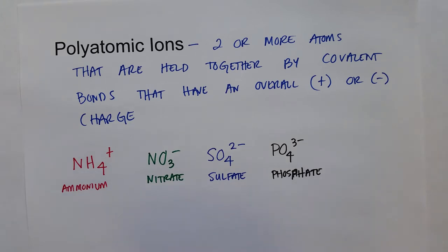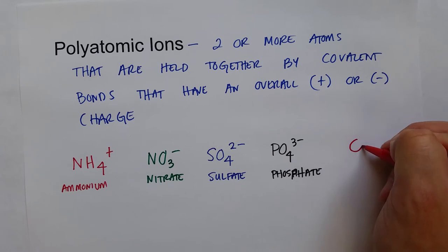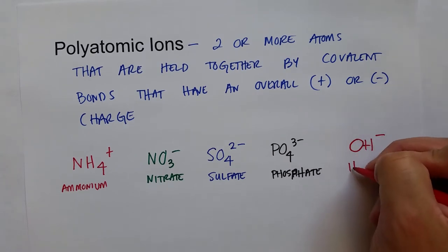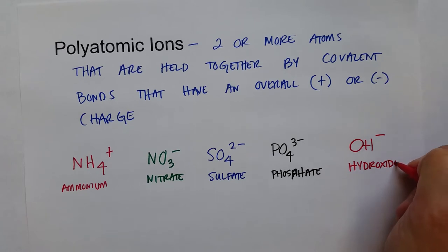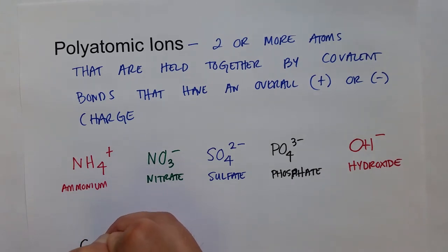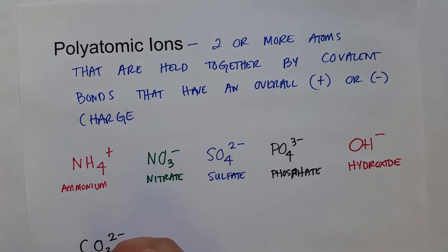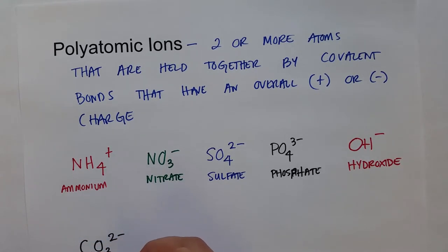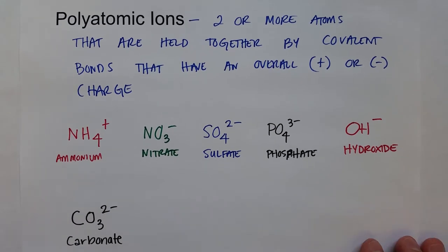And then a very common substance that is a base, which we'll talk about in later videos, is the hydroxide ion. Another one that we can talk about is the carbonate, CO3 two minus carbonate. And so these are some really common polyatomic ions that you run into in everyday life and in a laboratory.